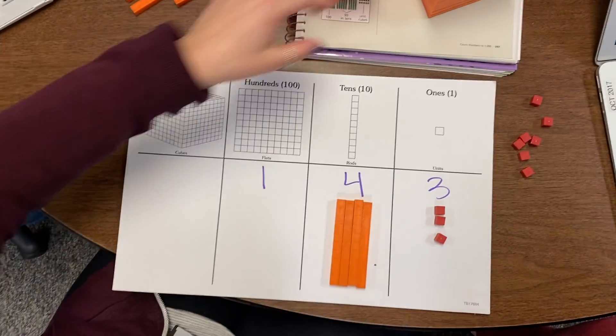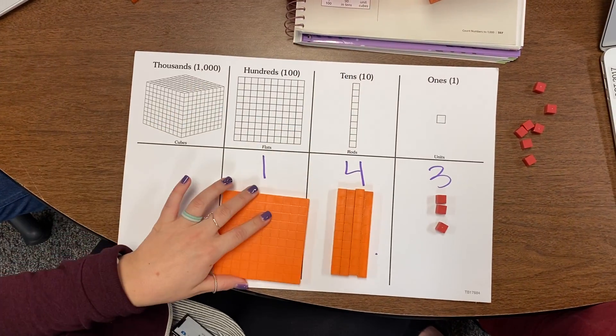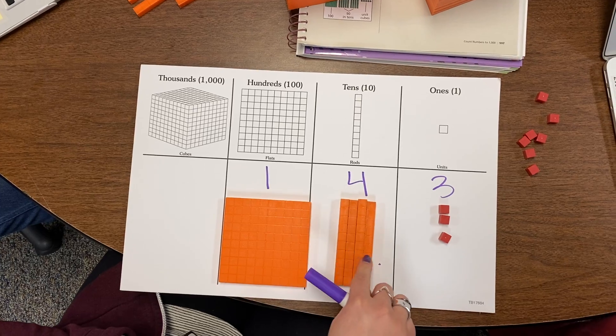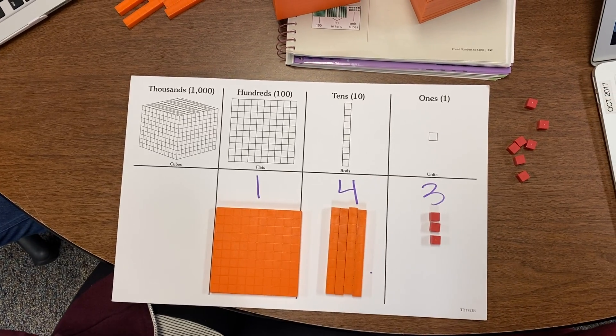And then we have a 1 in our 100's place. So we'll take a 1 to make our 100's. So we have 143. That would represent our number.